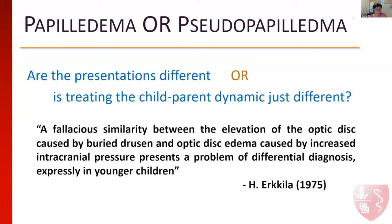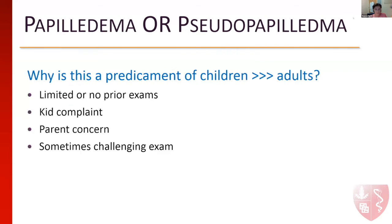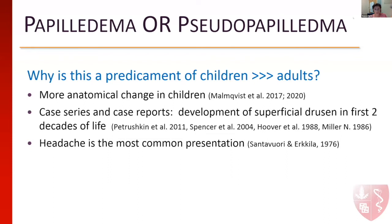So are the presentations actually different, or is this just the child-parent dynamic creating a different scenario? Way back in 1975, it was noted that 'a fallacious similarity between the elevation of the optic disc caused by buried drusen and optic disc edema caused by increased intracranial pressure presents a problem of differential diagnosis, expressly in the younger children.' That is still true today. Studies including Malmquist and more recent work show more anatomical changes during the childhood period, and there are multiple case series showing that the development of superficial drusen occurs during the first two decades of life. Headaches are the most common presentation, and over 50% of kids presenting with the differential of papilledema versus pseudopapilledema came with a symptom of headache.